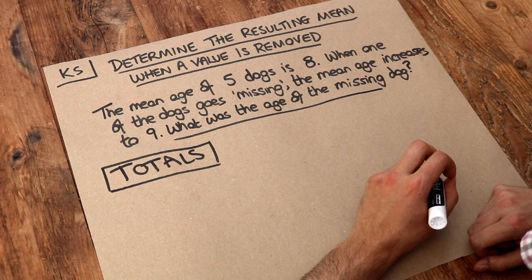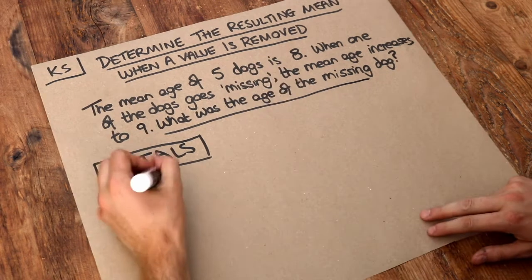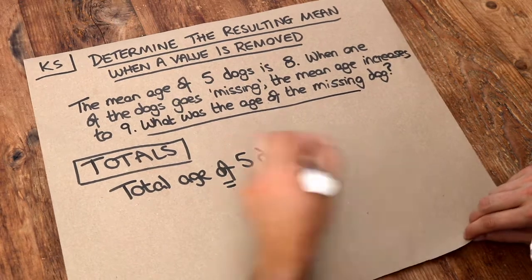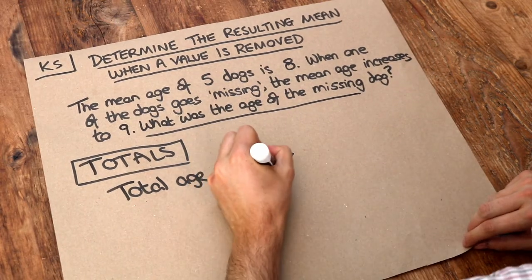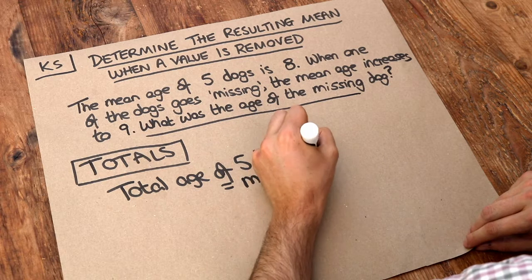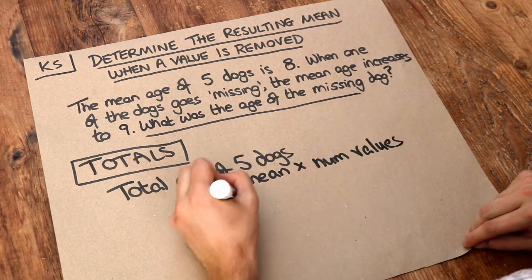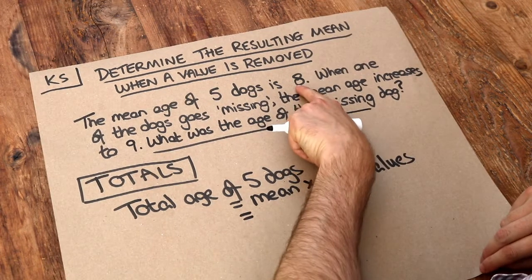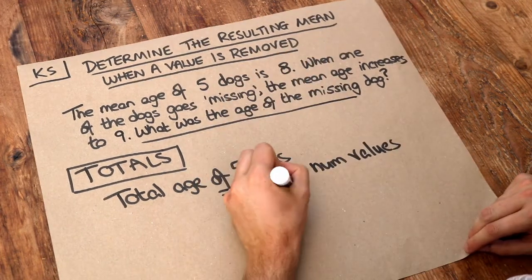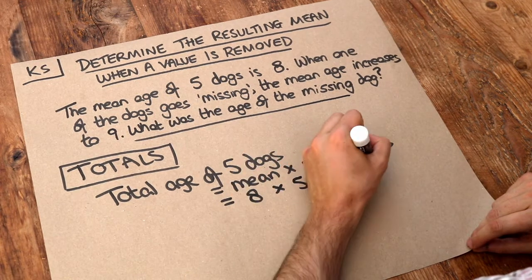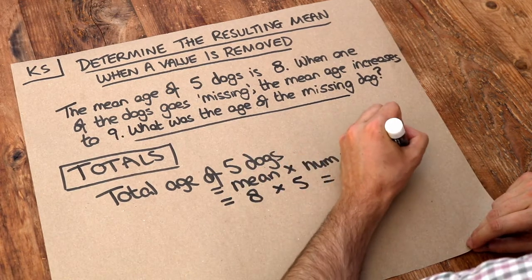So what was the total age of the five dogs before? Now in a previous video, we saw we could find the total of the group if we do the mean multiplied by the number of values. In this case, the mean age of those dogs was eight. We multiply by the number of values, five dogs, and that means their total age was 40 years.